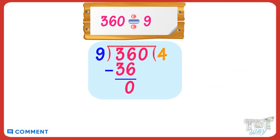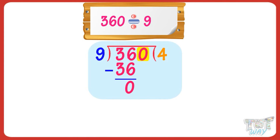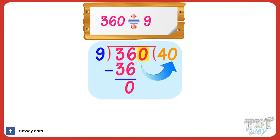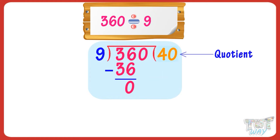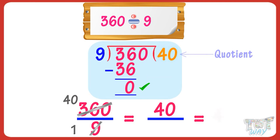Now, the only number left in the dividend is 0. In such cases, when the number left in the dividend is only 0, we just append it to the quotient. Our quotient is 40. So, 360 divided by 9 is 40.